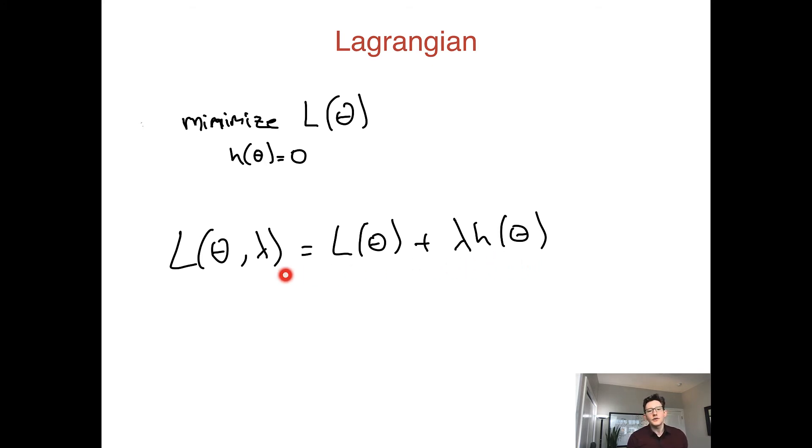Notice we don't have our constraint directly in this function. Forming this Lagrangian turns out to be very useful mathematically for constrained optimization, because our problem now becomes we want to minimize this Lagrangian function. To do that, we take its derivative with respect to both theta and lambda and look for a place where that equals zero.